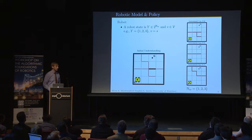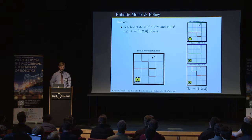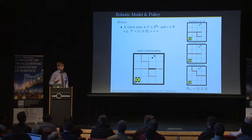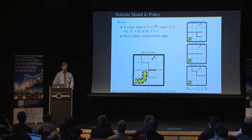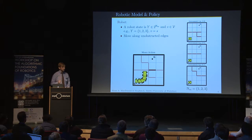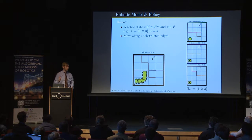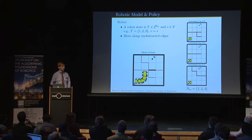The robot state is formulated over a belief and a position. In this example, the robot believes it could be environment one, two, or three — it hasn't learned anything different — and its initial position is S. We allow the robot to move over unobstructed edges. If the robot wanted to continue straight up, it couldn't do so until it updated its belief, because environments one and two both have that edge blocked and they're both contained in the belief.